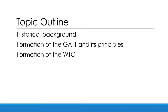We are going to discuss the Smoot-Hawley Act of 1930, which supported trade protectionism, in addition to the Reciprocal Trade Agreement Act which favored trade liberalization and created the Most Favored Nations clause that laid the foundation of the GATT principles. Second, we are going to discuss the formation of the GATT, including its members, principles, exceptions, and the multilateral trade rounds that eventually led to the formation of the WTO.